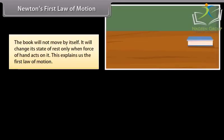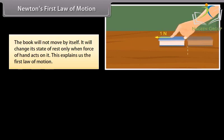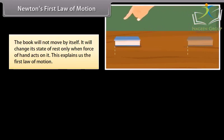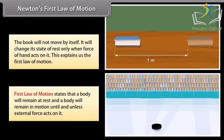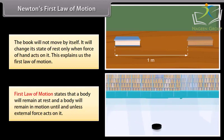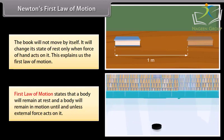The book will not move by itself. It will change its state of rest only when force of hand acts on it. This explains the first law of motion. First law of motion states that a body will remain at rest and a body will remain in motion until and unless external force acts on it.